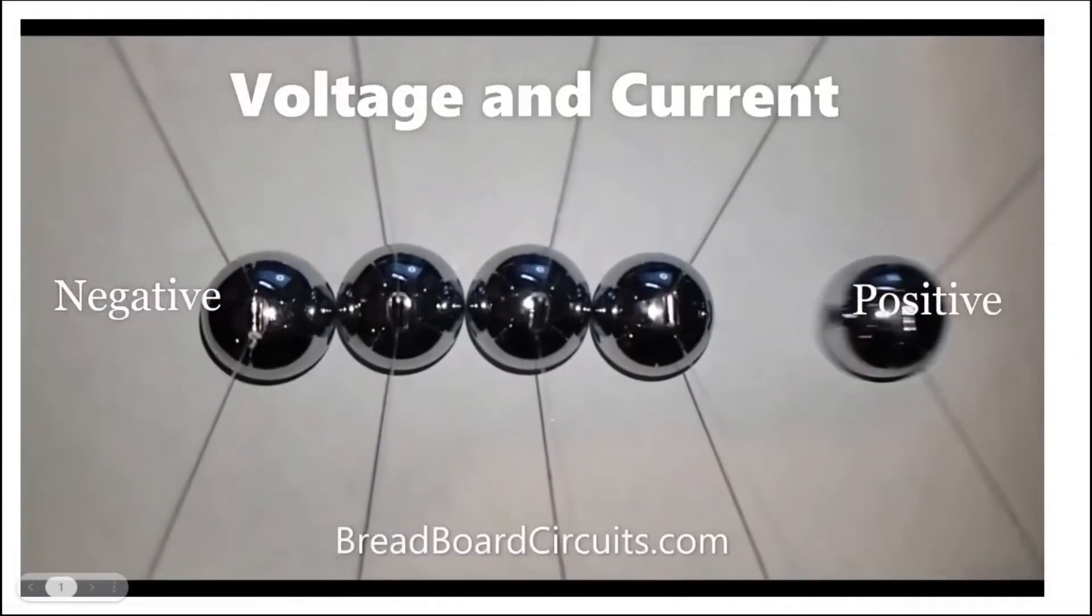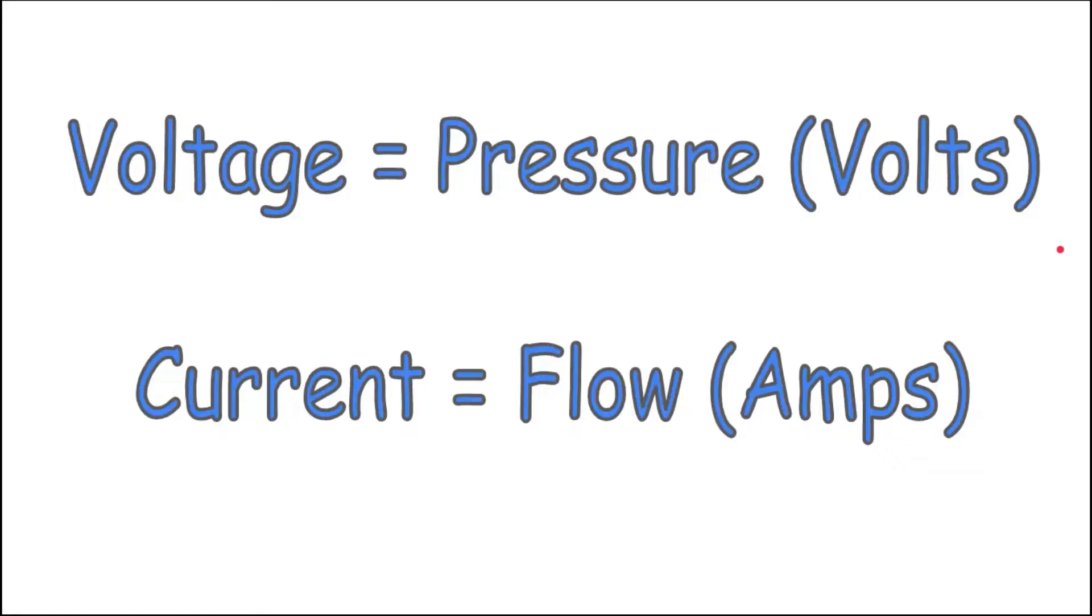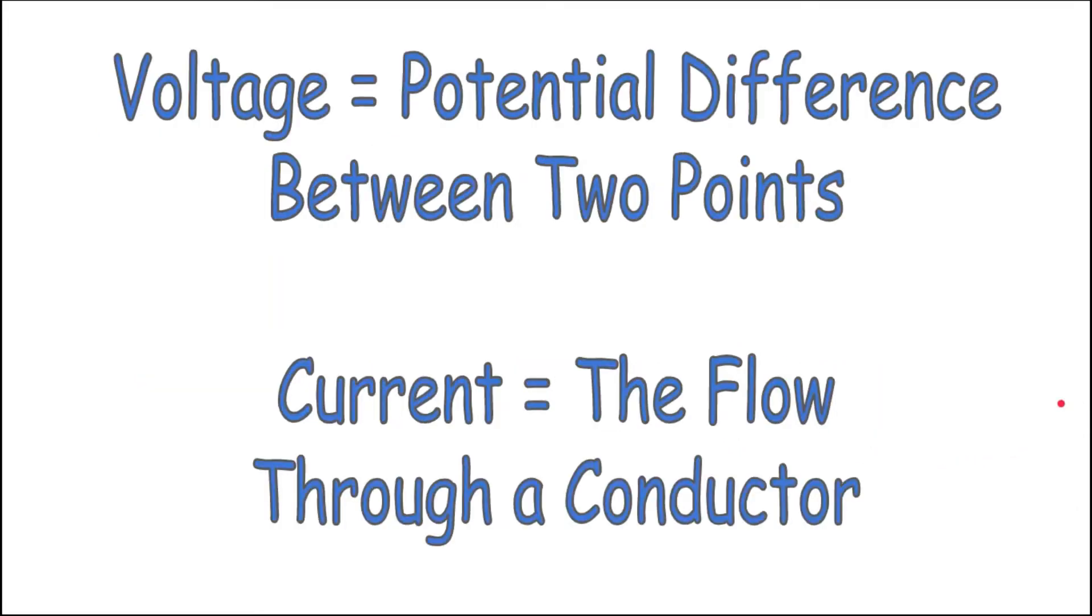What is voltage and current? Voltage is the pressure or force that tends to push electrons or charged particles through a conductor and is measured in volts. Current is the flow of those electrons or charged particles and is measured in amps. Voltage is measured as a potential difference between two points, whereas current is measured as rate of flow through a conductor.